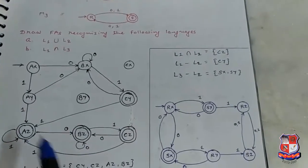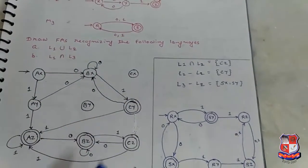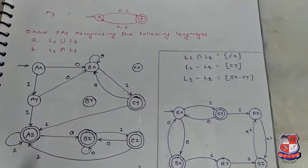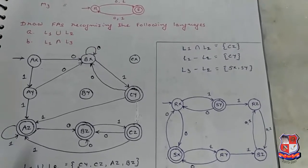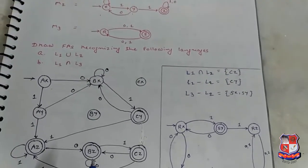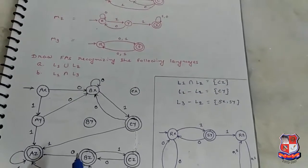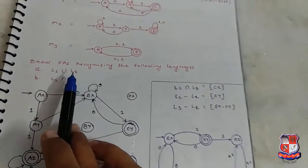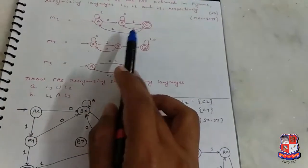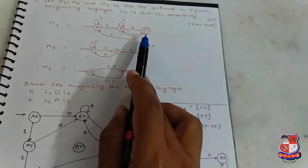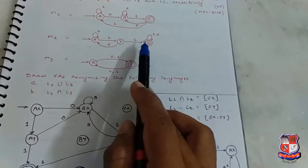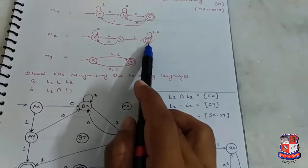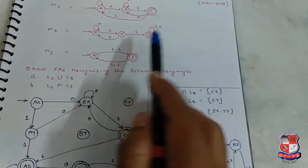Thus draw all the possible input symbols for visited states only. Now for final states, for L1 union L2: in L1 final state is C, and in L2 final state is Z.